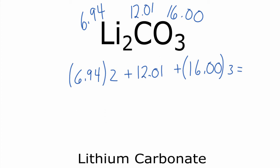So two times 6.94 gives us 13.88 plus our 12.01 plus three times 16.00 is 48.00. And now we can just add these numbers up here.